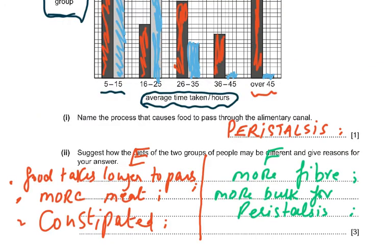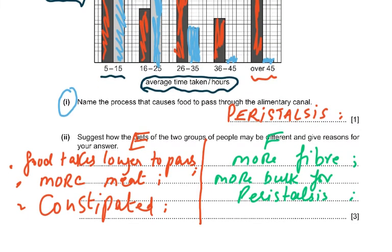The first part asks you to name the process that causes food to pass through the alimentary canal — that is peristalsis. Then suggest how the diets of the two groups may be different: group E, where food takes longer, may eat more meat or have constipation; group F, where food moves faster, had more fiber and more bulk for peristalsis.